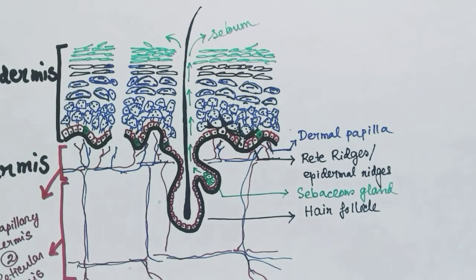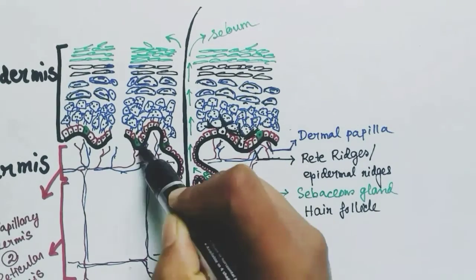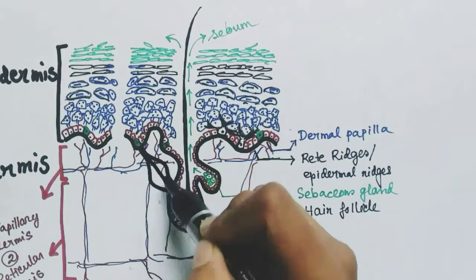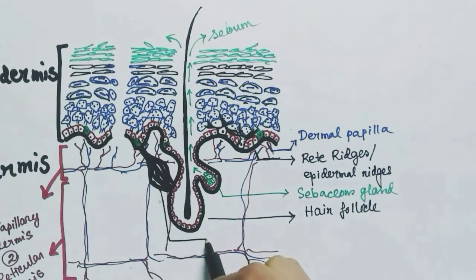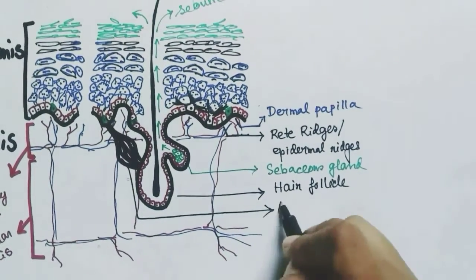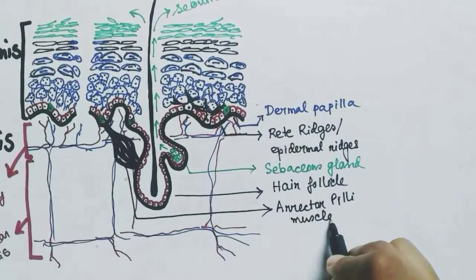The next component of the dermis is the erector pili muscle, which is connected to the hair follicle. It contributes to the erection of the hair.